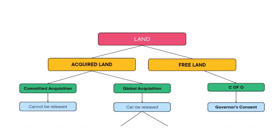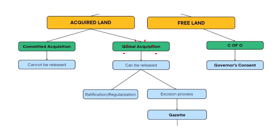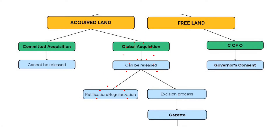If the land under government acquisition is actually a global acquisition, then there's good news. Land under global acquisition can be released to the individual through two processes. One is ratification, or regularization. Ratification simply means that after you buy the land from the indigenous owners, you also have to pay the government to release the land to you. So you are effectively paying for the land twice in ratification.